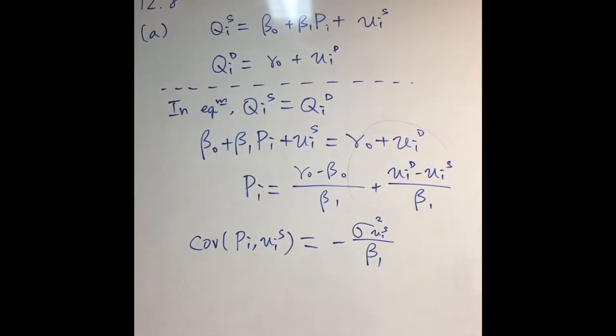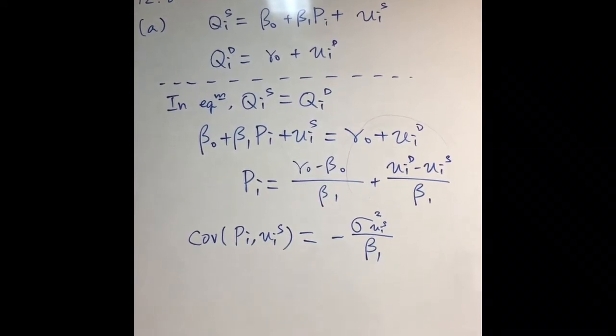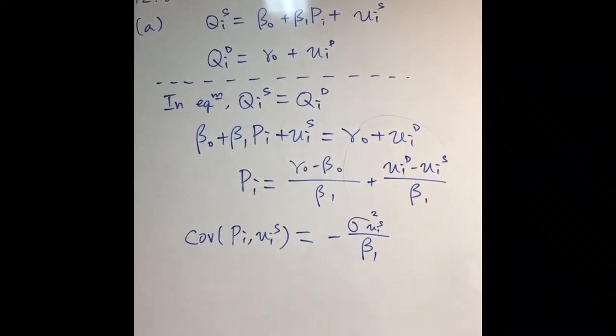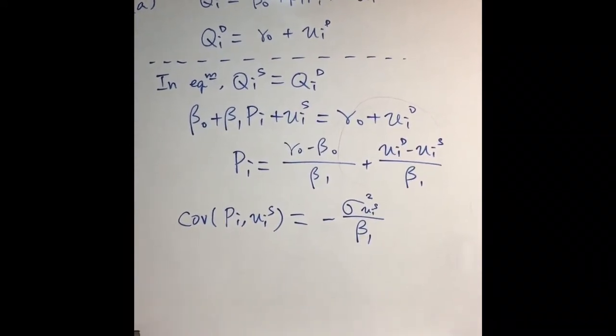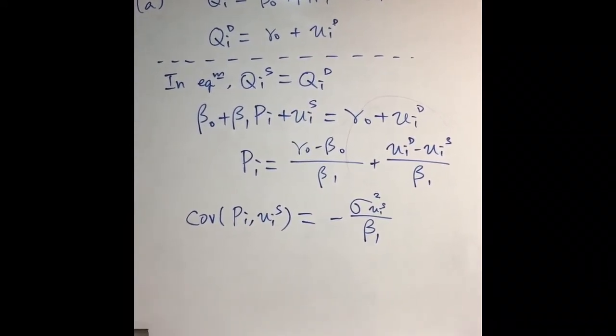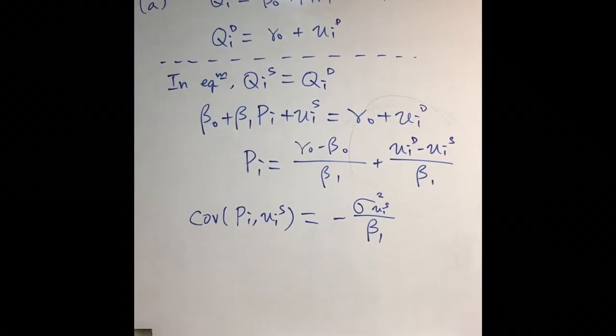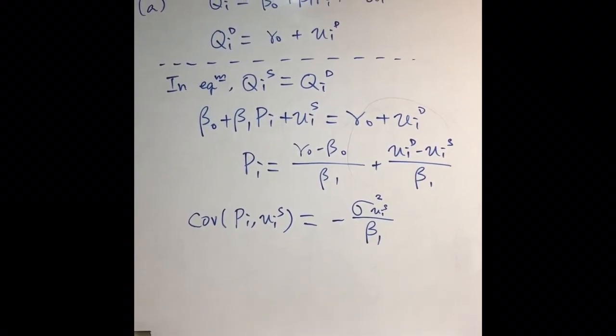Then you can apply the covariance formula and find that the covariance is not equal to zero. As a result, you can show that PI and UIS are correlated.